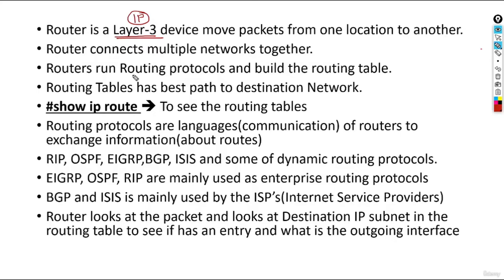Routers run routing protocols. The main advantage of a routing protocol is that it is the language of a router — it builds the routing table. The routing table has the best path to the destination network. To view the routing table on a Cisco router, the command is: show ip route.